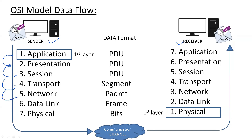The next layer is the Network layer, which provides routing as well as IP addressing. After that, the data is forwarded to the Data Link layer, where encapsulation is done. Finally, the data is forwarded to the Physical layer, where it is converted into bit format.